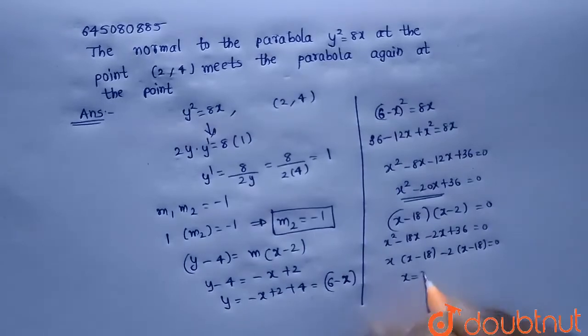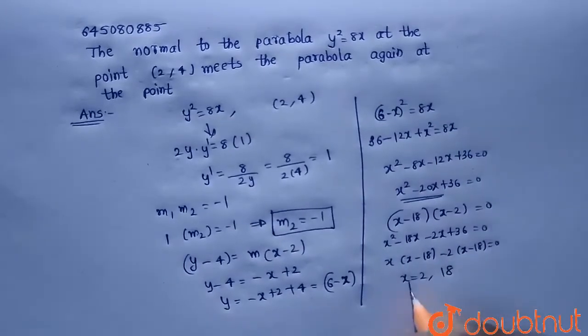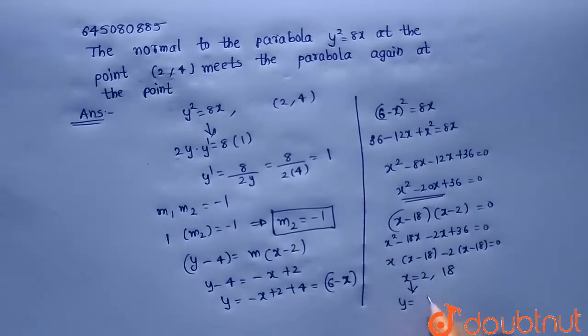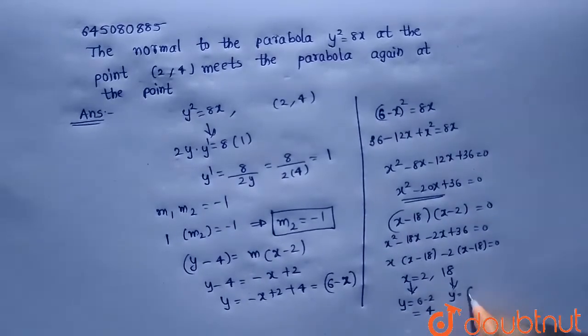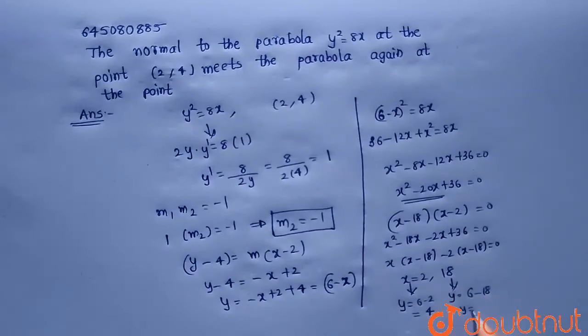So from this x = 2 or x = 18. But when x = 2, y = 6 - 2 = 4. And here y = 6 - 18 = -12.